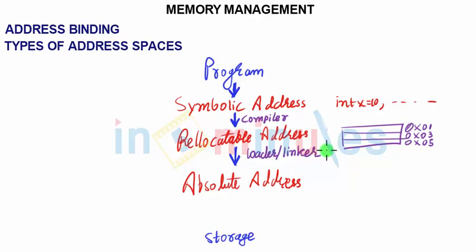or user has written is getting stored, and the linker will simply link it to a physical address which is needed. So types of address spaces would be: symbolic address, relocatable address, and absolute address.